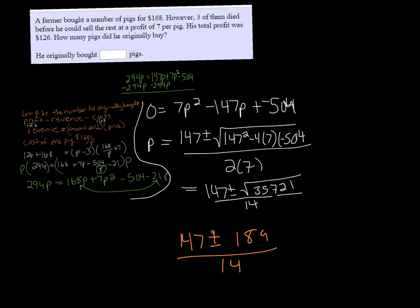So if I do 147 plus 189 and divide that by 14, I get 24. So one answer for P is 24. And then if I subtract 189 and divide that by 14, I get minus 3.